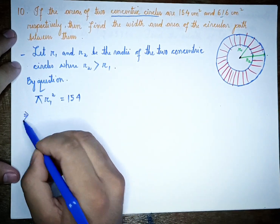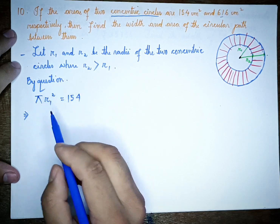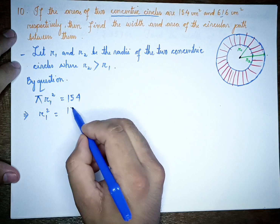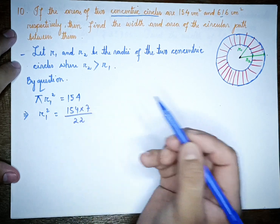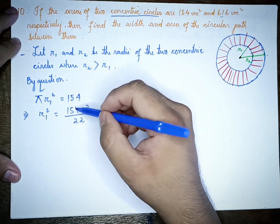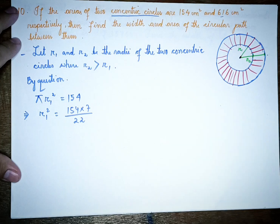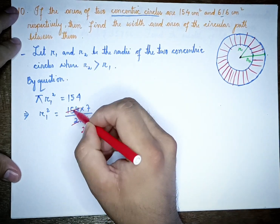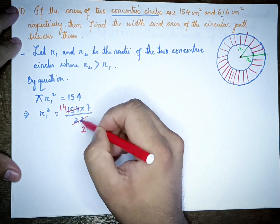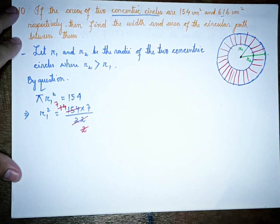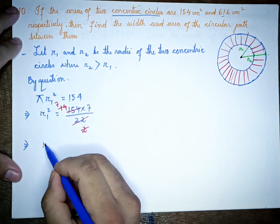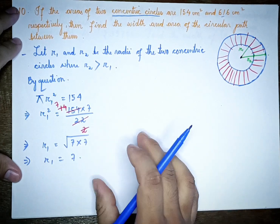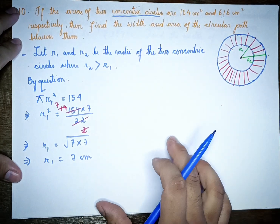Using π = 22/7: r1² = 154 × 7 ÷ 22 = 49. Therefore r1 = √49, which gives r1 = 7 cm.